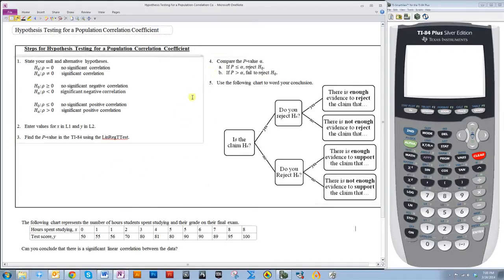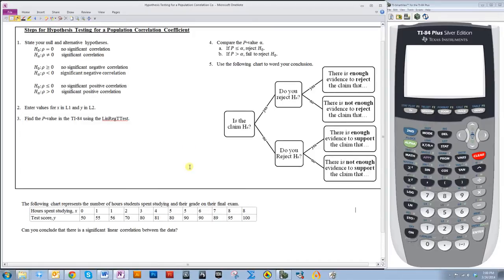Once you find your p-value, you can compare it to alpha. And then I'll tell you if you reject or fail to reject H0. And then you can use the following chart to determine how you are going to word your conclusion.